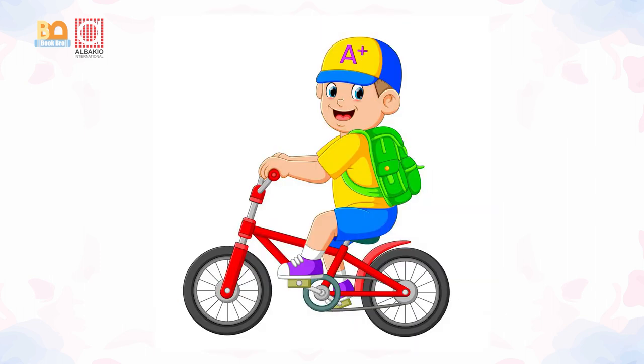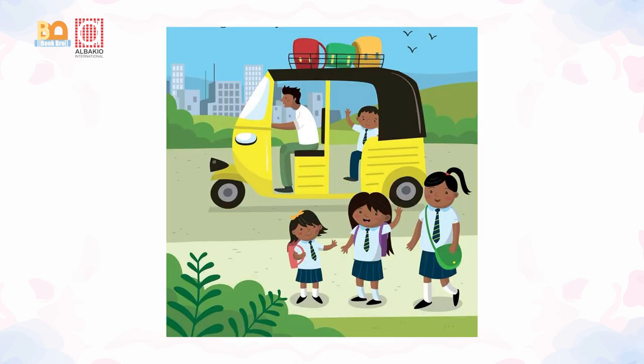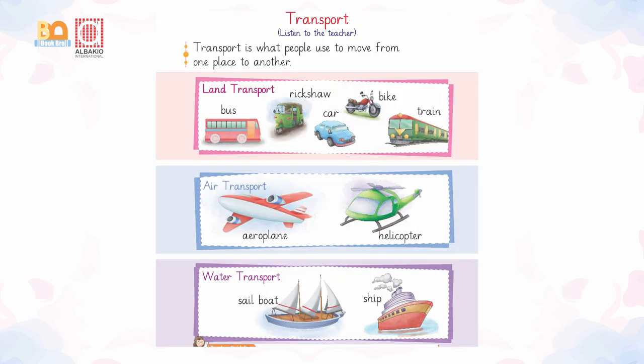Dear kids, Ali comes to his school by a bike. Sarah comes to her school by a school bus. Rida uses a rickshaw, whereas Sana uses a rickshaw and bus. What are these?